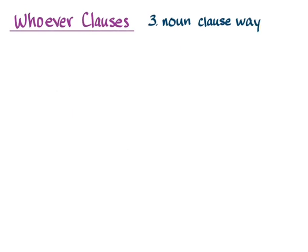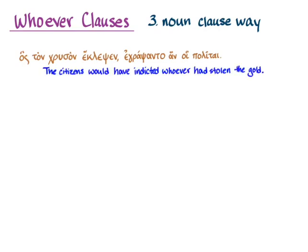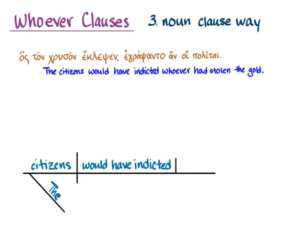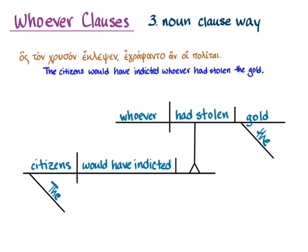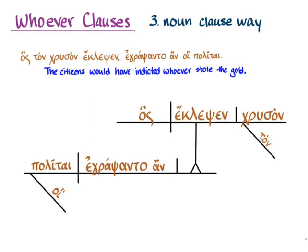One more example — this is one of the examples from before, but without the ekeinos. The citizens would have indicted whoever had stolen the gold. You can diagram the main clause with 'the citizens would have indicted,' and then in that direct object spot, put the whole clause on a pedestal instead of just a noun or pronoun: 'they would have indicted whoever had stolen the gold.' Now in Greek, same structure — you can see again our indefinite relative clause is there on the pedestal, taking the place of a noun or pronoun in the direct object spot of this diagram.